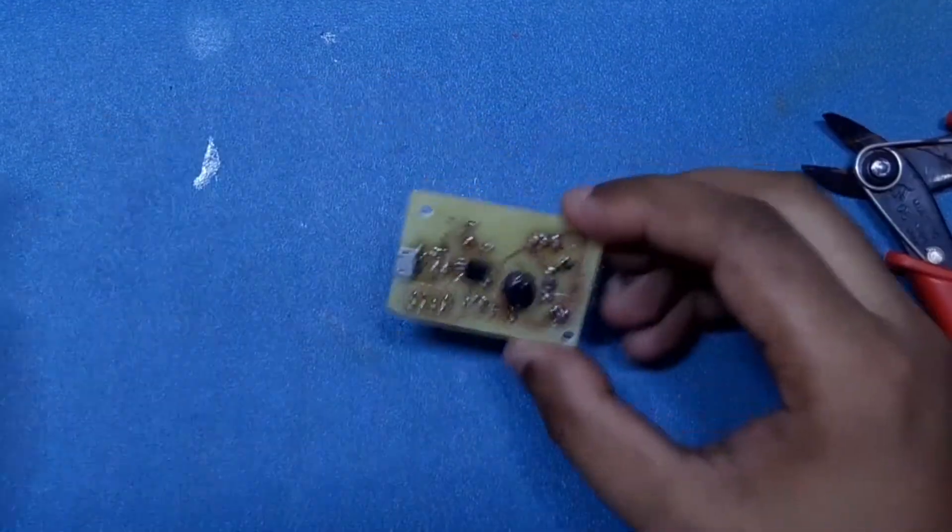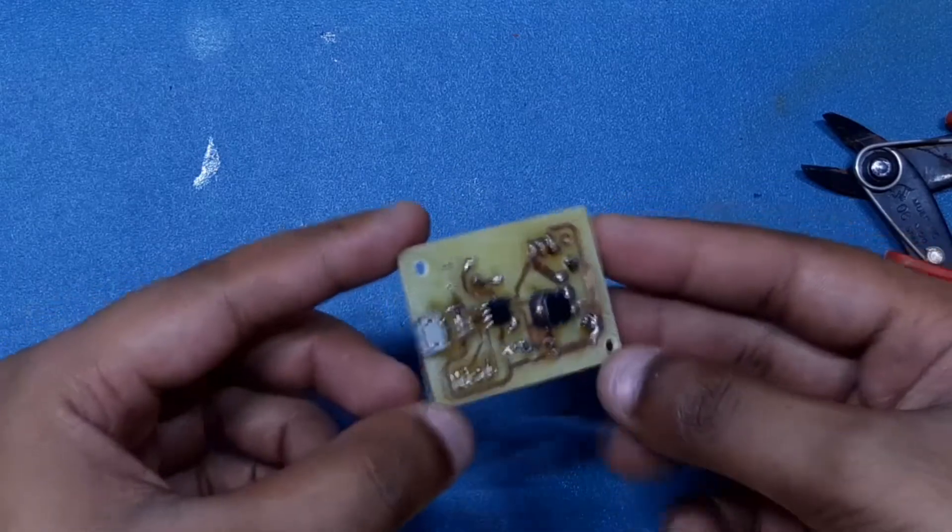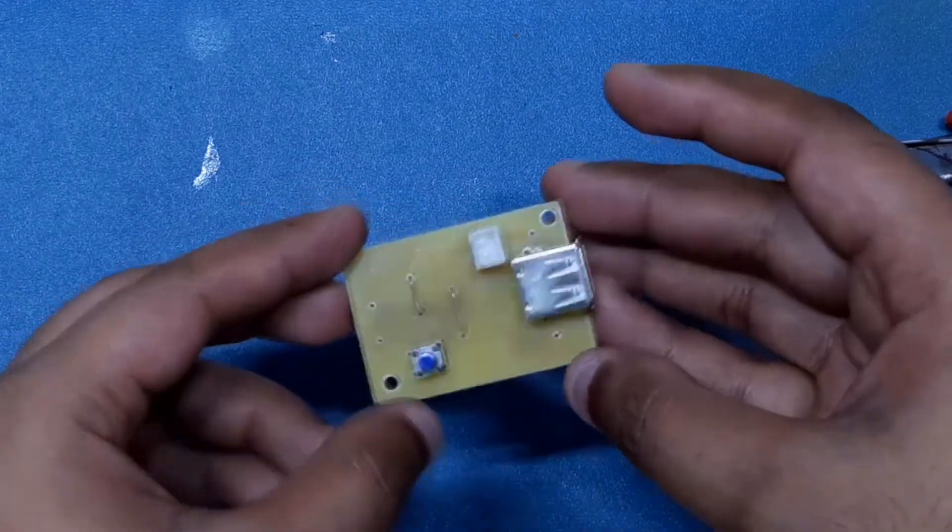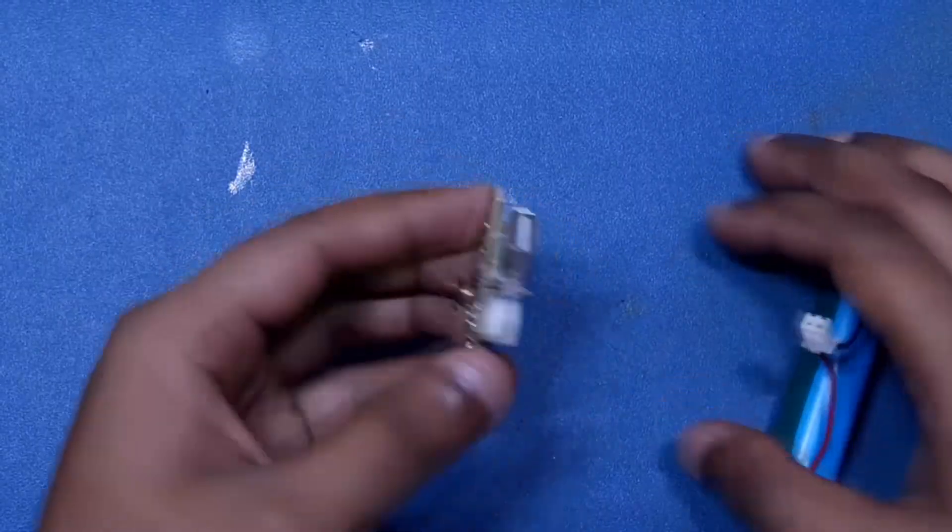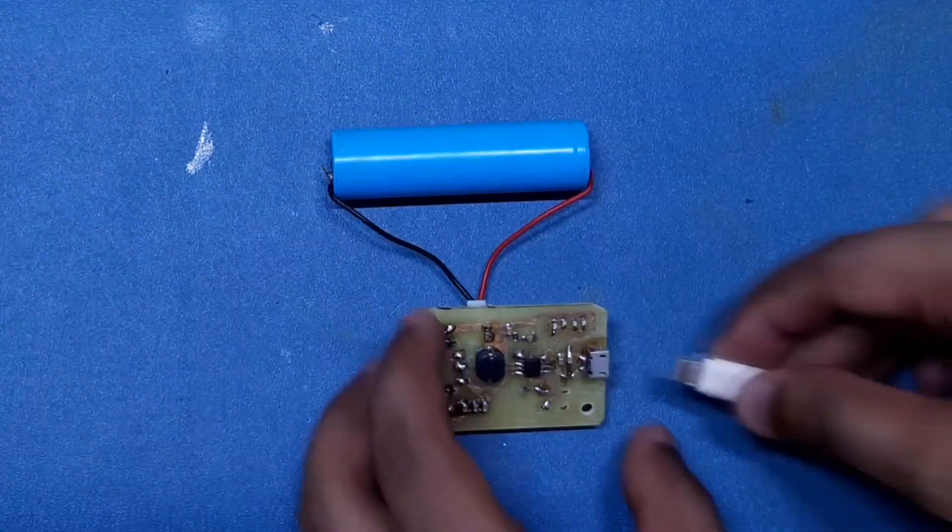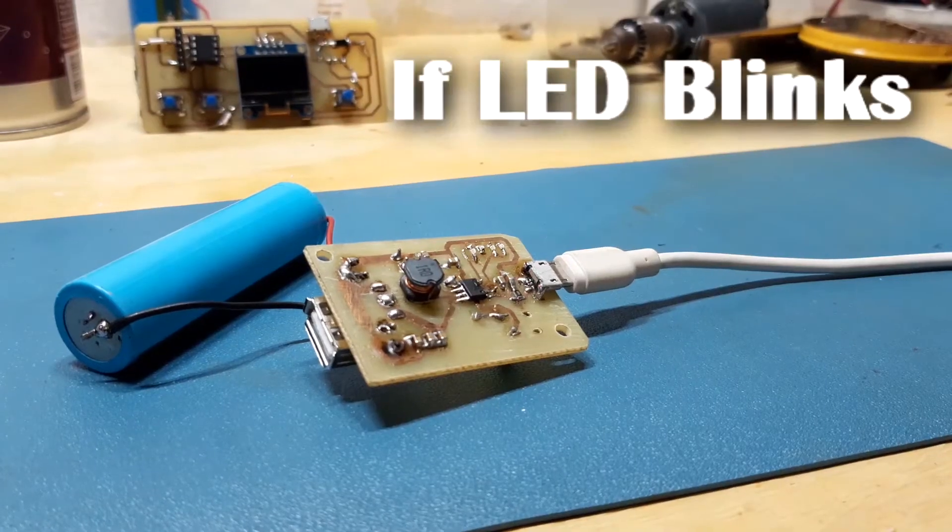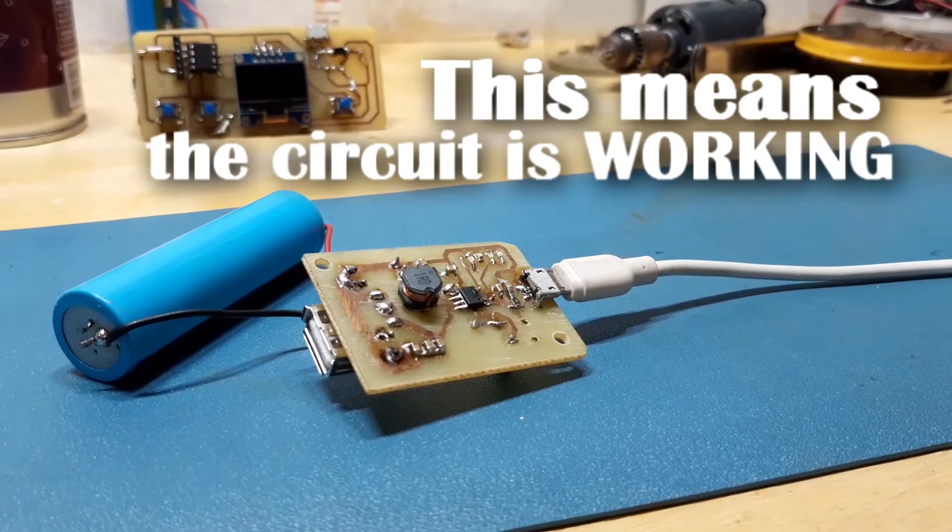Okay, so our circuit is now ready. Add the lithium cell first to it and then connect the charger to it. If the LED blinks, this means the circuit is working.